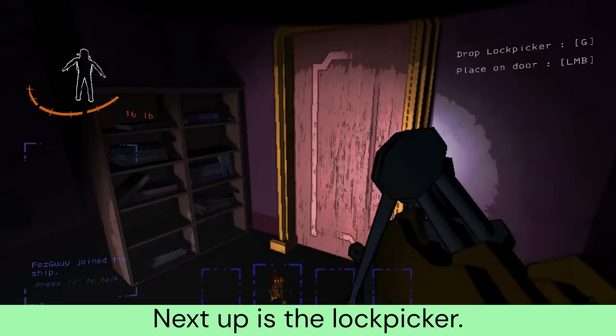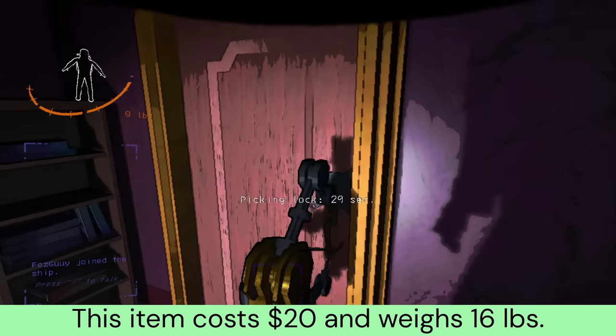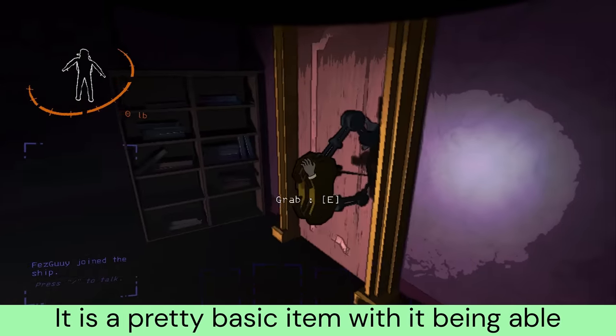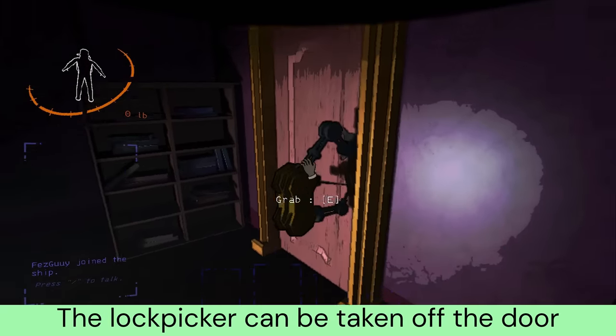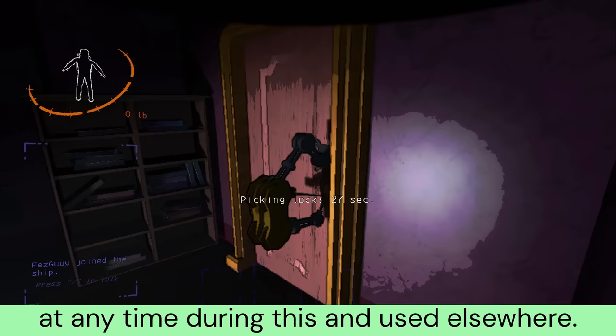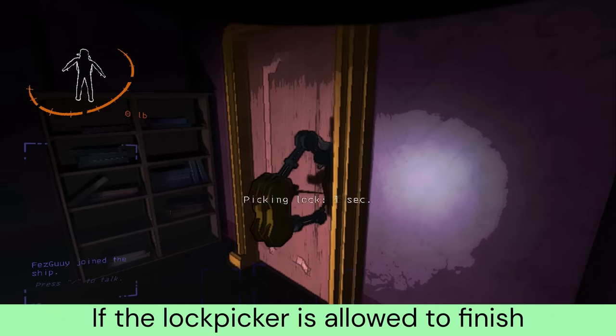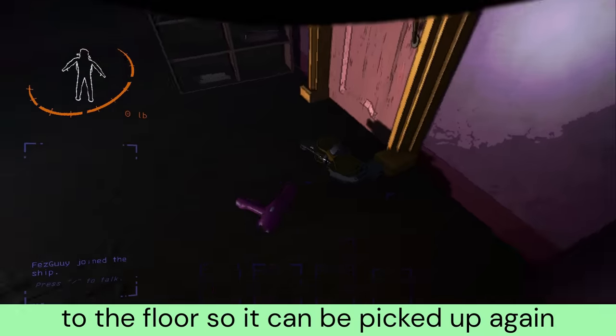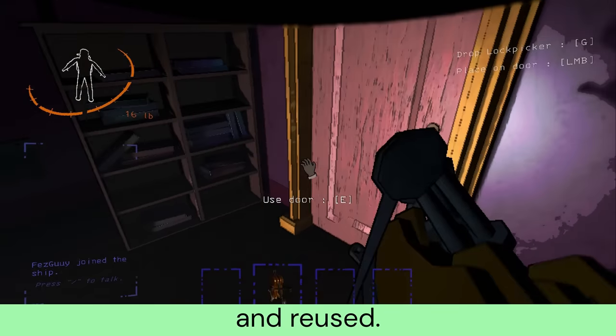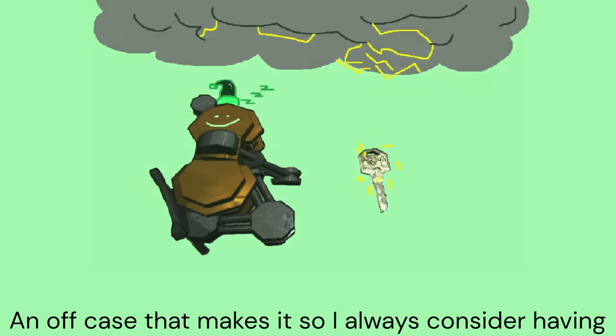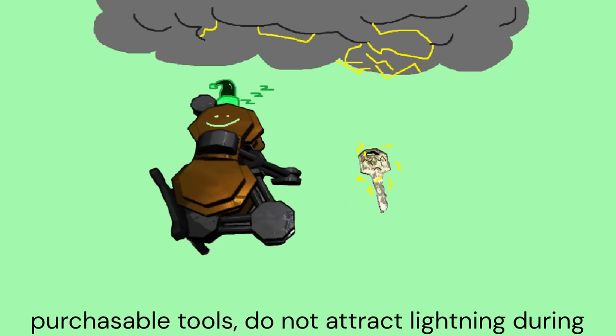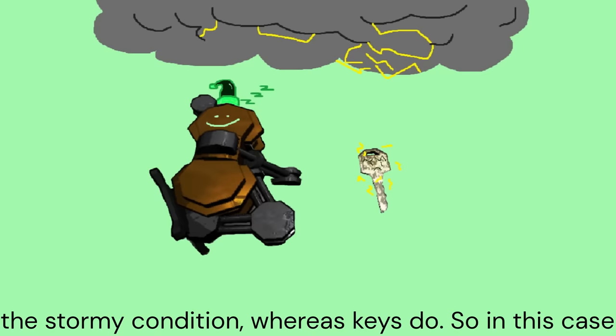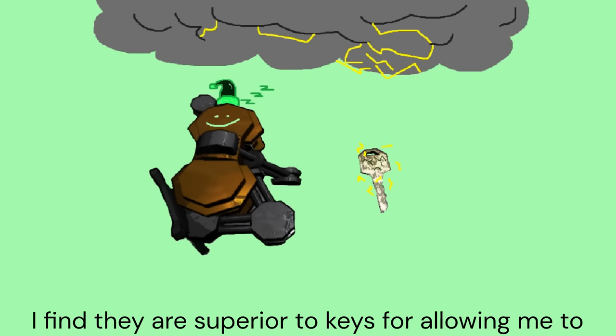Next up is the lock picker. This item costs $20 and weighs 16 pounds. It is a pretty basic item with it being able to unlock locked doors when you place it on them. This process takes 30 seconds. An off case that makes it so I always consider having one in the ship is that they do not attract lightning during the stormy condition, whereas keys do. So in this case I find they are superior to keys.